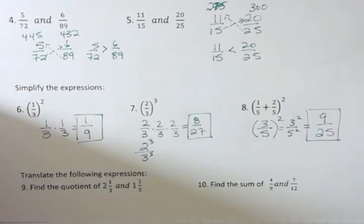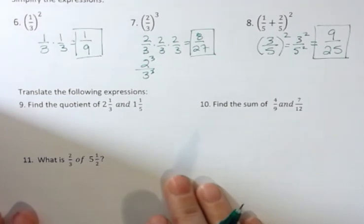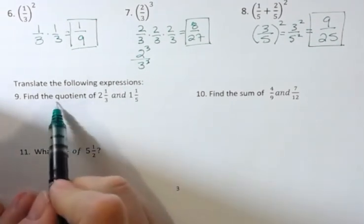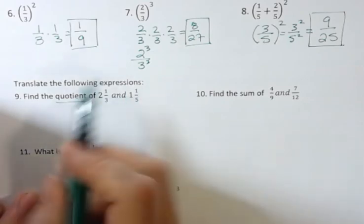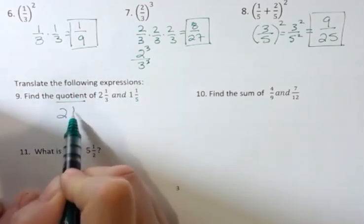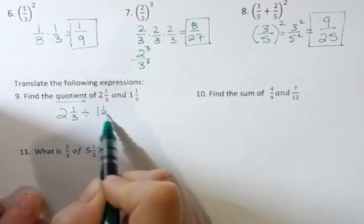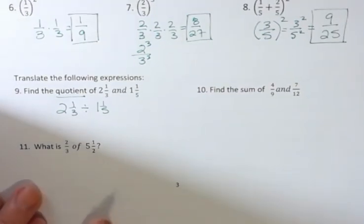And the last thing on this video is just translating. I wanted to remind you that you see things, and sometimes it just asks you to translate, not to solve. Find the quotient of. What is a quotient? A quotient is division. And whatever they state first has to go first. So this would look like two and one-third divided by one and one-fifth. That's just the translation. We're not having to solve it, but just know what a quotient is.